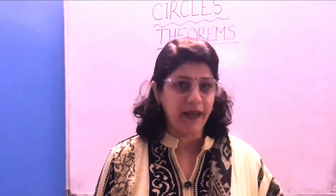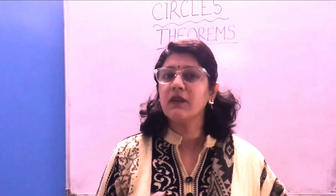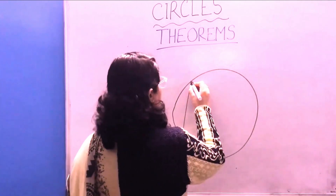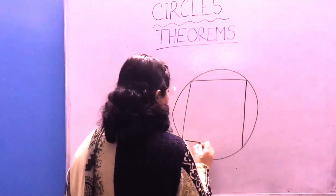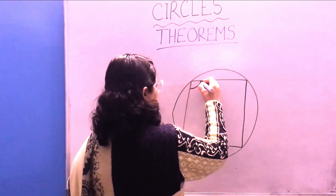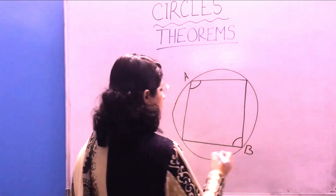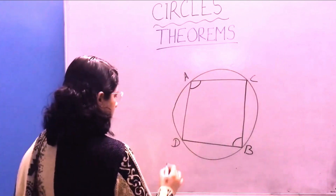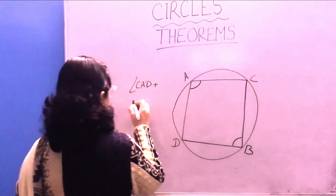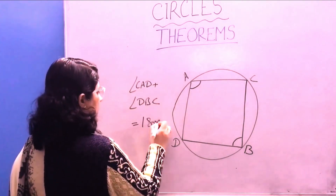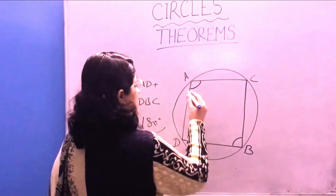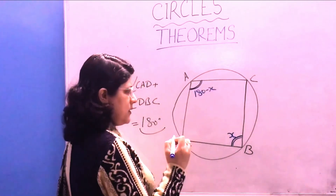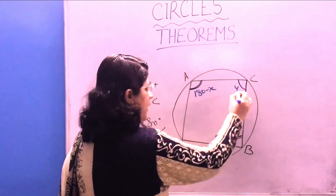The next theorem is: opposite angles of a cyclic quadrilateral are supplementary, meaning their sum is 180 degrees. In a circle, a quadrilateral is inscribed with all four corners on the circumference. The sum of opposite angles — say angle A and angle B — is 180 degrees. For example, angle CAD plus angle DBC equals 180 degrees. If one angle is X, the opposite angle is 180 minus X; if another angle is Y, its opposite is 180 minus Y.